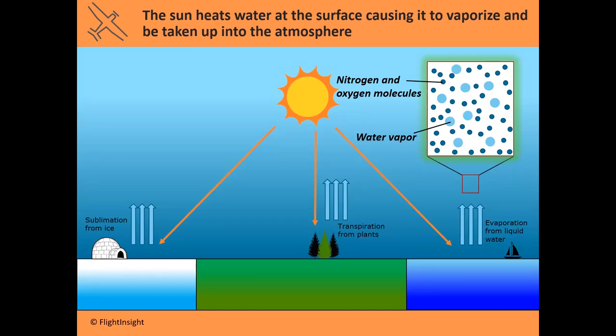Up to this point, we've talked about the atmosphere without talking about a major component that makes up what's in the air that we breathe. Typically there's air, which is mostly nitrogen and oxygen molecules, but there's also a presence of water — plain old H2O — water vapor that's in the atmosphere. How does that water vapor get there, and how does it affect the weather we experience? It gets there through three major processes, all involving the sun heating up water at the surface, causing it to vaporize and carry it up into the atmosphere.